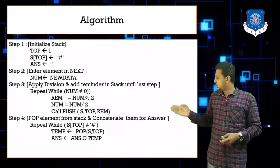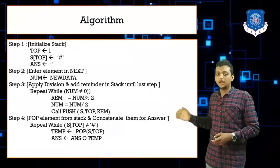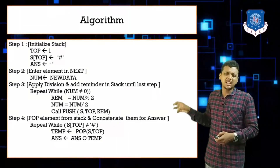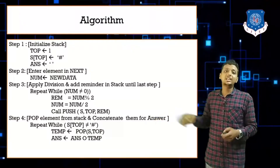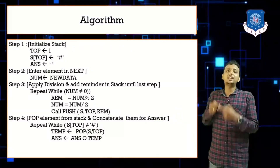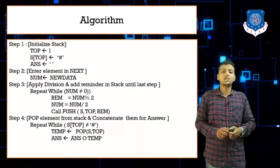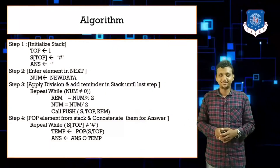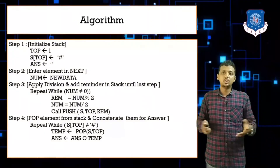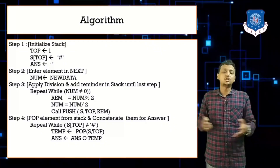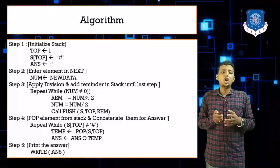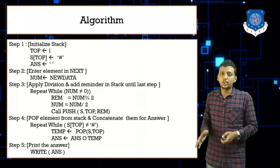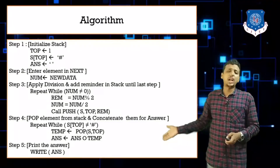To reconstruct the answer: repeat while S[top] ≠ hash — pop from the stack into temp, then concatenate temp with answer: answer = answer + temp. This is the complete decimal to binary conversion algorithm. Now let's move on to the second stack application: reversing a string.